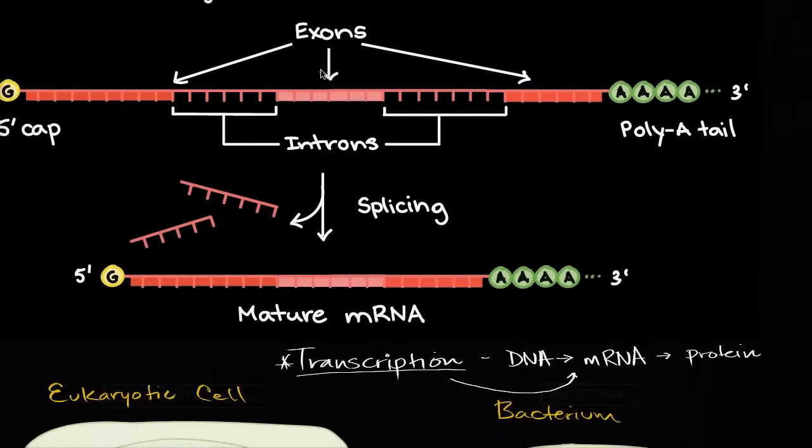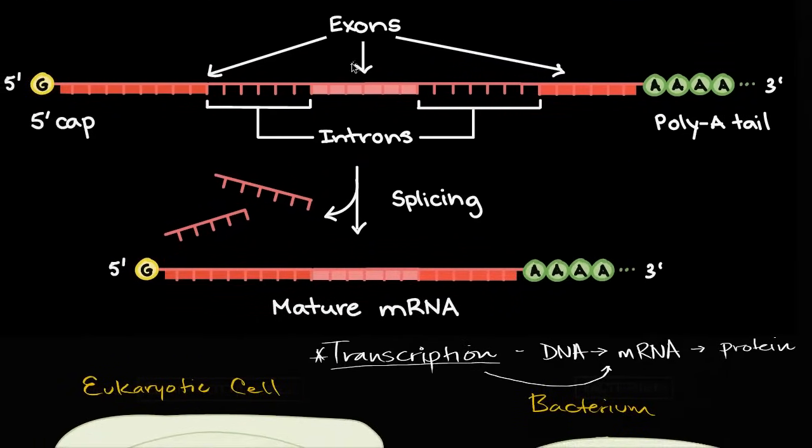And you might say, well how is that going to be processed? Well there's a couple of things that are going to be done. Some things are going to be added at the beginning and the end of the mRNA. The five prime cap, this is a modified guanine, modified guanine right over here, which is going to help in the translation process as the ribosomes attach onto it.